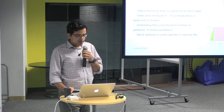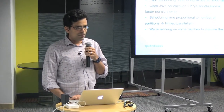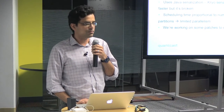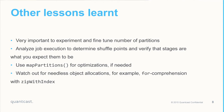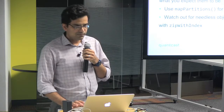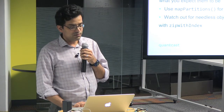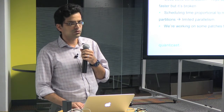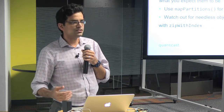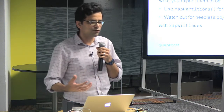Another thing to notice is that scheduling time, as this figure shows, is proportional to the number of partitions you have. So if you think you can parallelize your work by just having more partitions, that only works to a certain level because then the scheduling time itself starts becoming significant. When trying to speed up Spark programs to run in a few seconds, it's very important to experiment and fine-tune the number of partitions — it's a balance between parallelism and the latency you're willing to accept.